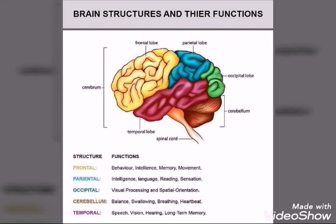The frontal lobe is at the front — you know the forehead, which is on the top front of the head. The parietal lobe is on the back of the head where we keep the forehead area. The area related to speech is where the occipital lobe is located.